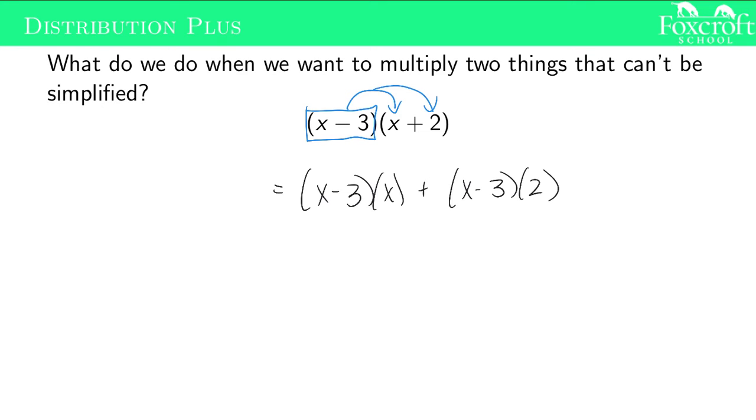This doesn't help too much, but what I can do is now I have this x next to the parentheses. I can distribute this backwards in, and same thing with this 2. I can distribute that backwards in. x times x is going to be x squared minus 3 times x plus 2 times x is 2x minus 6.